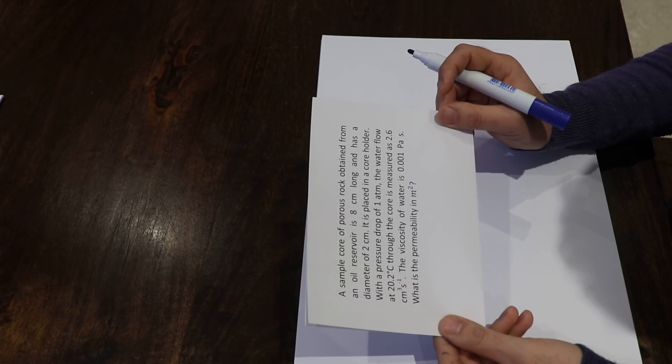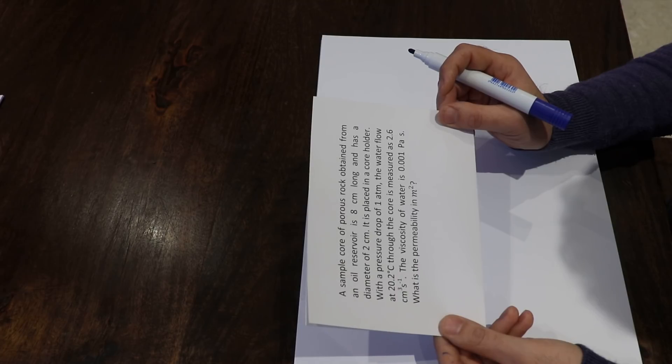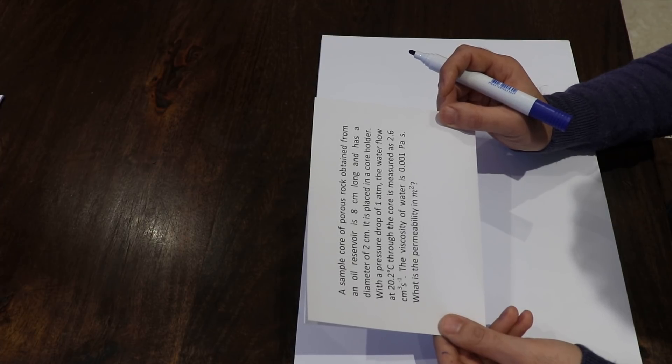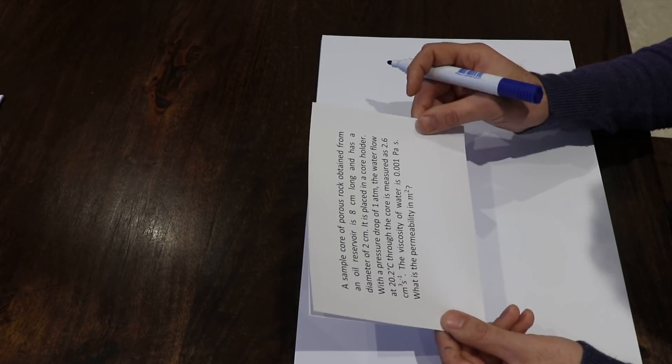With a pressure drop of one atmosphere, the water flow at 20.2 degrees Celsius through the core is measured as 2.6 cubic centimeters per second. The viscosity of water is 10 to the minus 3 Pascal seconds. What is the permeability in square meters?